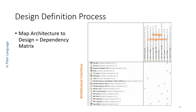One key consideration is ensuring that all architectural functions and architectural components are captured in the design. One way to do that is to develop a dependency matrix, which has the architecture functions and components on the vertical axis and the design components — the technology that will be used to implement them — in the columns. We can then check off which technological components are required to satisfy each architecture function.